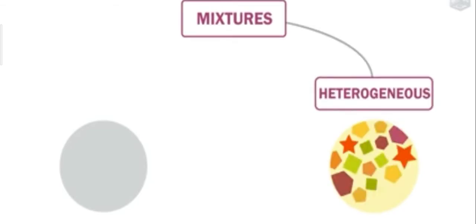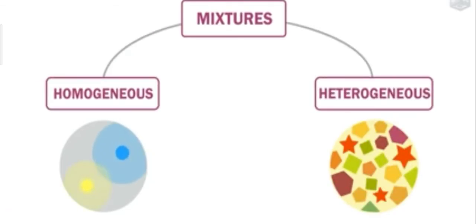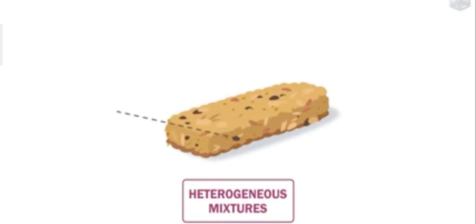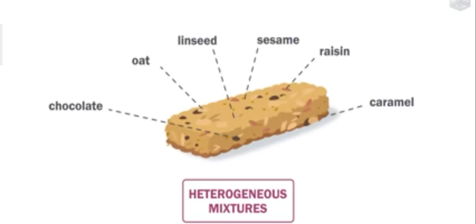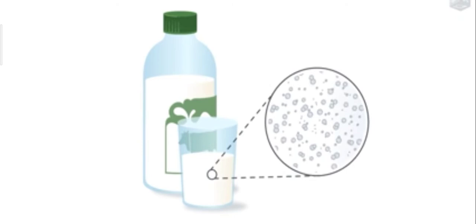The mixture can be categorized as homogeneous or heterogeneous mixture. Now I'll show you an example of milk, but from the microscope it will be visible that the fat, serum and all these things will be found. This will also be our heterogeneous mixture.